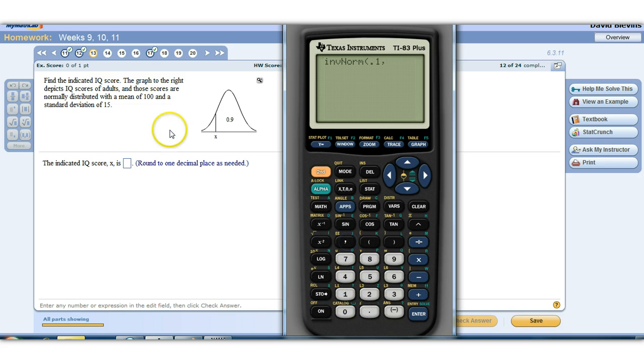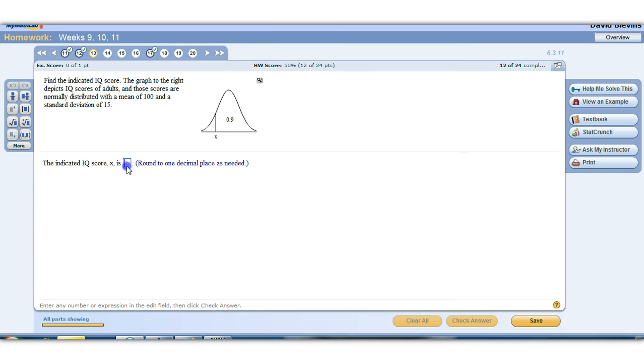Comma, 100, comma, 15. Close that off. 80.7 to one decimal place, 80.8.